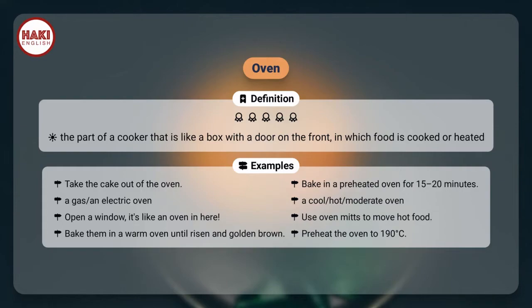Open a window, it's like an oven in here. Use oven mitts to move hot food. Bathe them in a warm oven until risen and golden brown. Preheat the oven to 190 degrees Celsius.